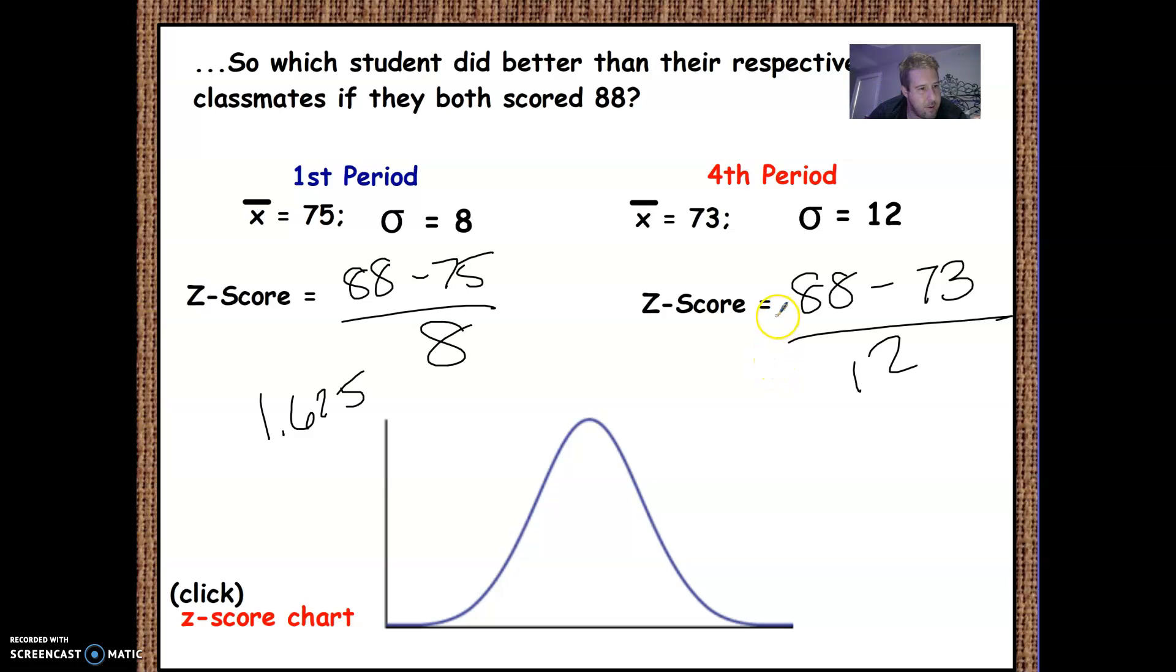And then over here, 88 minus 73, then divide that answer by 12, and you get 1.25. So clearly, it looks like the person in first period who got an 88 did better than the person in fourth period who got an 88, which seems kind of funny to say that, but they did better compared to their class.